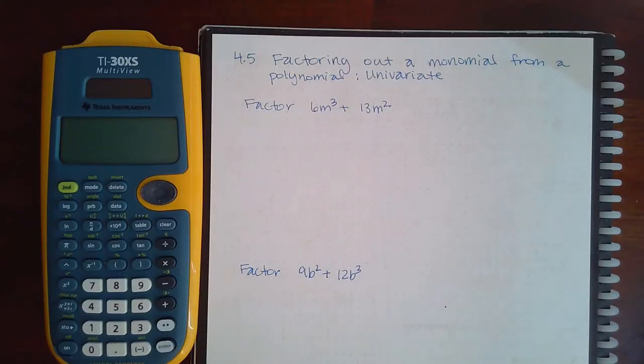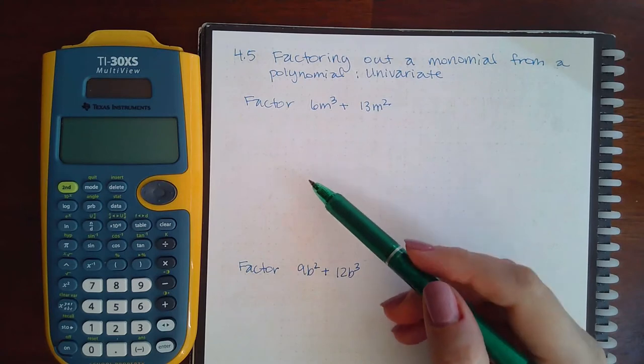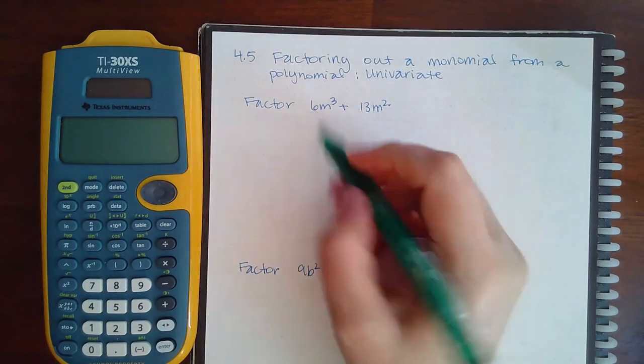Here we have 4.5 factoring out a monomial from a polynomial univariate. So the first thing we need to do is identify the GCF and then we have to factor it out. Between 6 and 13 they have no number in common but they do have m's in common and I take out two.